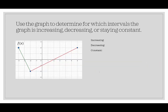Let's look at some examples. We want to use the graph to determine the intervals in which this graph is increasing, decreasing, or staying constant. We notice this graph has distinct endpoints — it's bounded. On the far left, we have the point negative four, two. Another important point is negative two, and the other endpoint is at six, two.